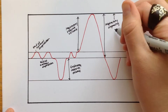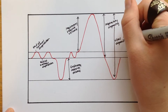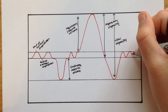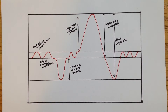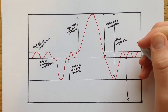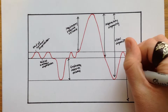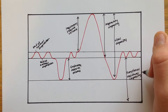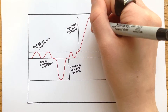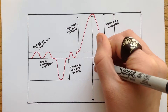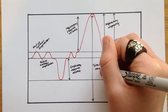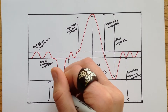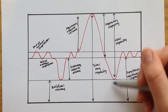The vital capacity is the maximum amount of air someone can exhale after taking the deepest possible breath they could. Functional residual capacity is the volume of air present in the lungs after passive expiration. This line represents the total capacity of the lungs, and lastly the residual volume is the air left in the lungs after exhalation.